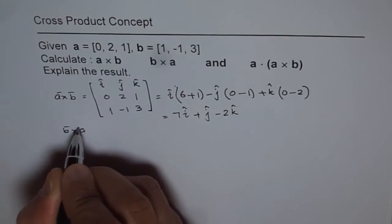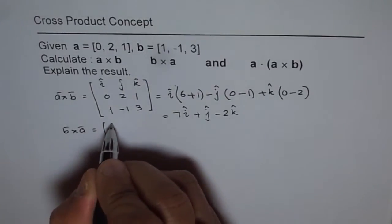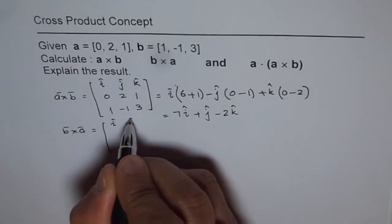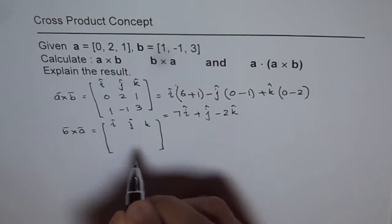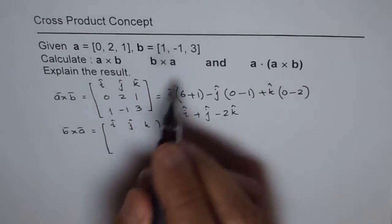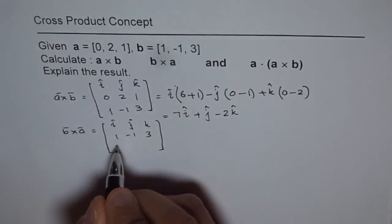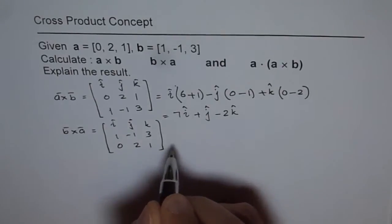B cross A is equal to I, J, K. So we write I, J, K and then B vector is 1, -1, 3 and then we have 0, 2, 1.